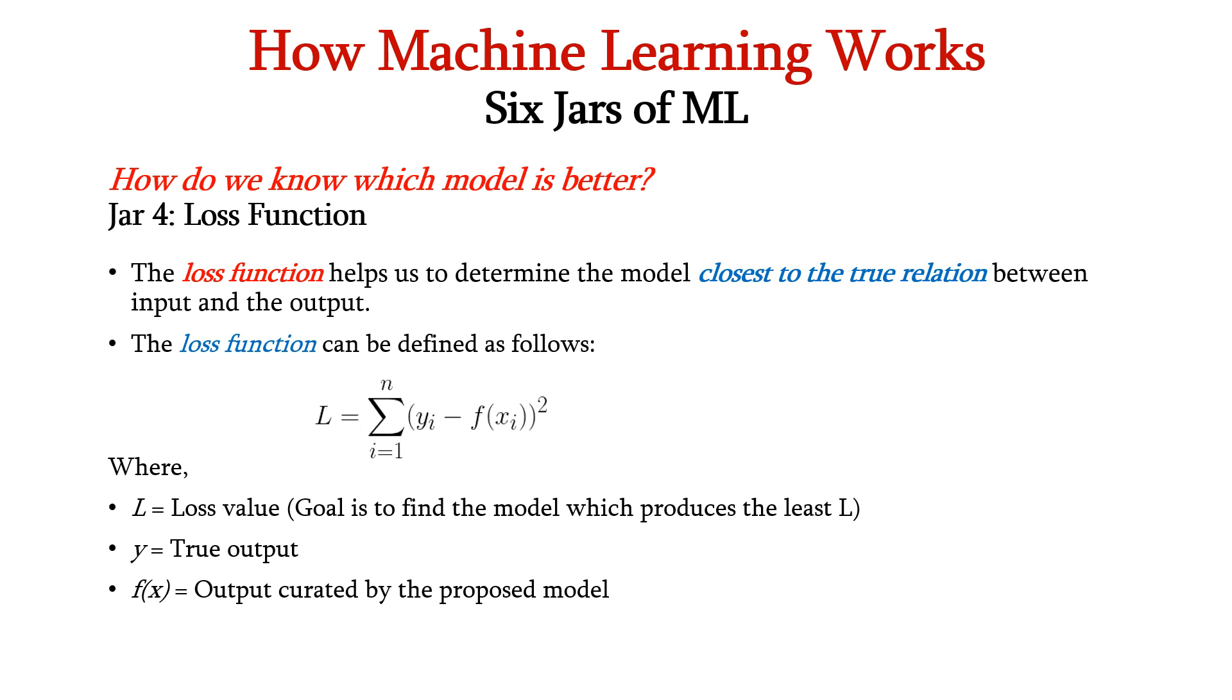Now, we can use many equations to create a model. How do we know which model is better? Here comes the loss function. The loss function helps us to determine the model which is closest to the true relation between the input and the output. It can be expressed as mentioned here: L = Σ(yi - f(xi))². This is called mean square error. Here L is the loss value, y is the true output and f(x) is the output curated by the proposed model.